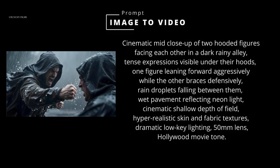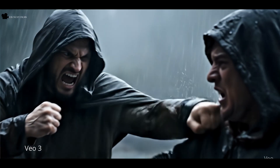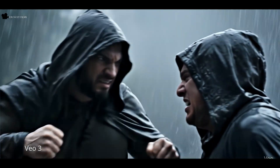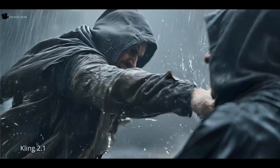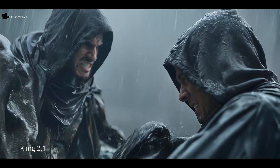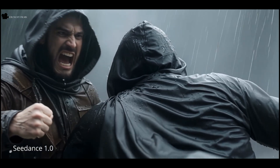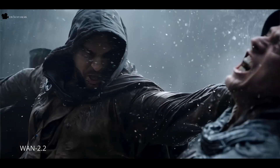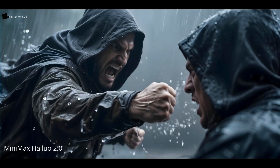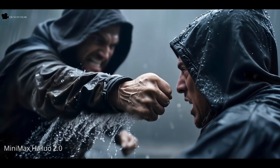For our final image to video test, we pushed the models with a full action shot — a hooded man throwing a knuckle punch in the rain, captured in high-speed slow motion. Veo 3 really surprised here. For the first time, it completely nailed the prompt, delivering exactly the movement we asked for, with dramatic rain particles and cinematic impact — it takes the top spot. Kling 2.1 comes in second, handling the cloak fabric beautifully and giving a strong action feel, but not following the prompt as precisely as Veo. Seedance and Wan 2.2 share third place — both produced solid results but neither fully locked into the required punch motion. Minimax Hyluo 2.0 lands in last place, capturing some cinematic energy but straying the most from the intended action.